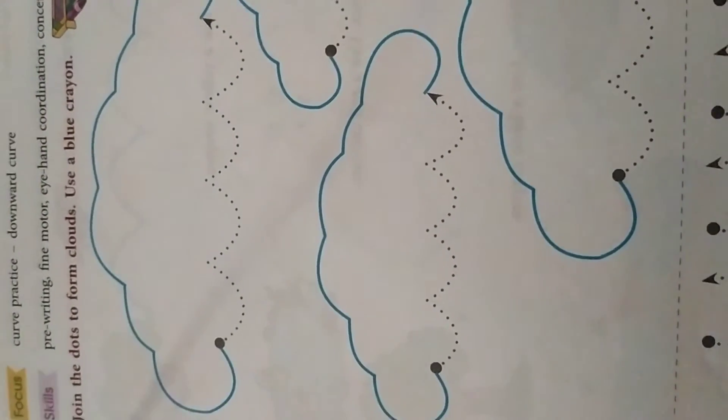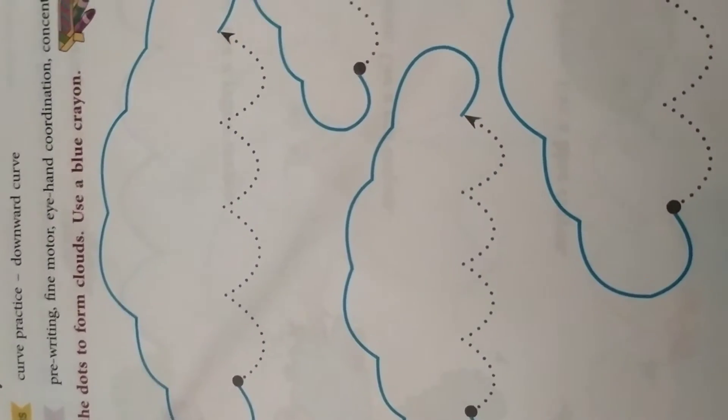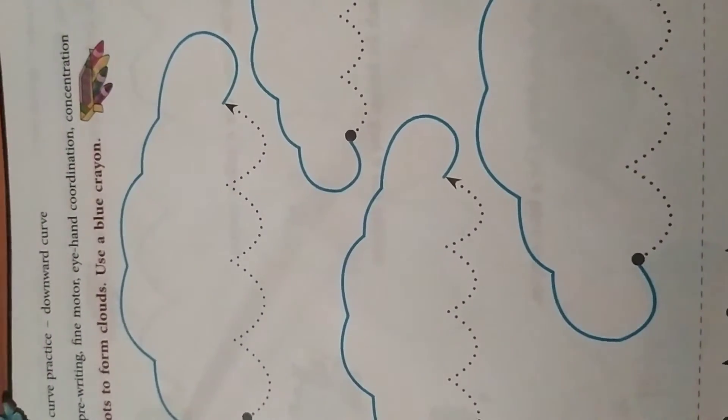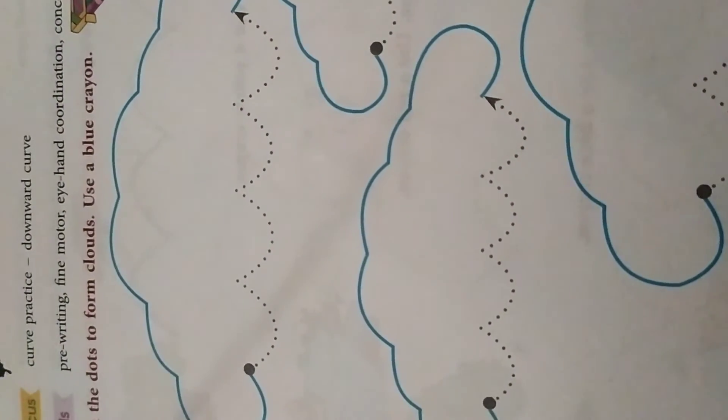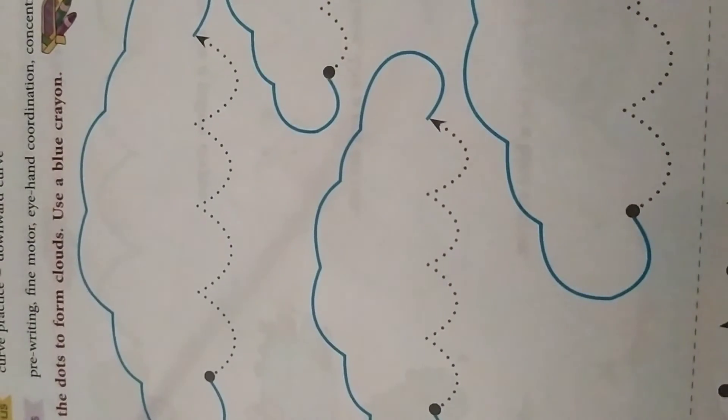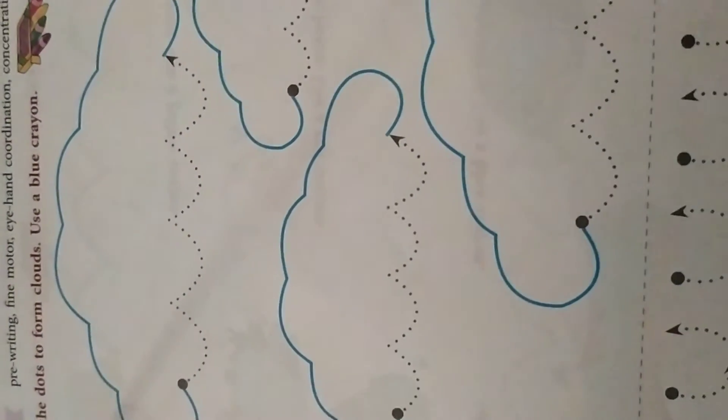Okay, so join the dots to form clouds. Use a blue crayon. Children, already here it is given blue color. And the remaining ones, dots are given, you need to join all the dots with the blue color crayon and complete the picture.